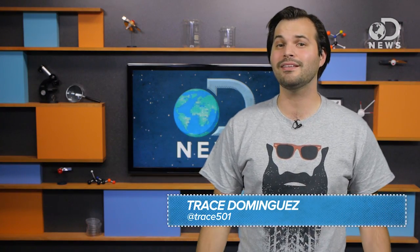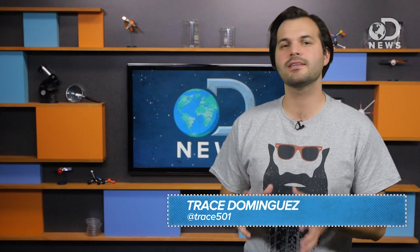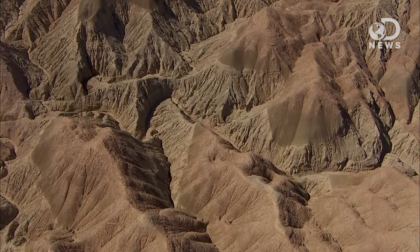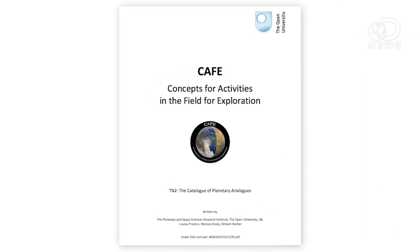Hey space nerds, Trace here with your weekly DNews space update. Space is a cold, desolate, lonely place, kind of like Antarctica or maybe the Badlands. And now we know exactly how much space is like those places, thanks to this fantastic document from the Planetary and Space Science Research Institute at the Open University in the UK.